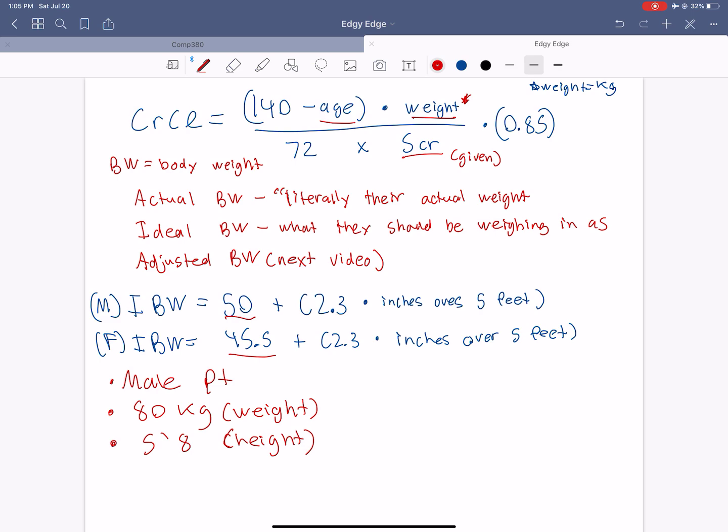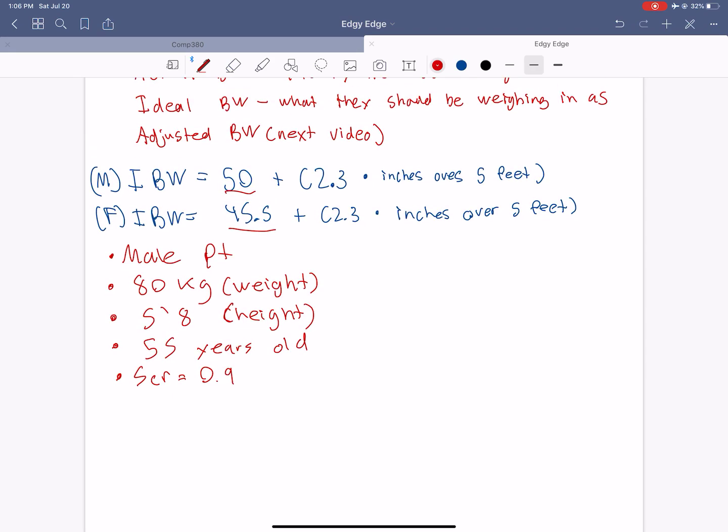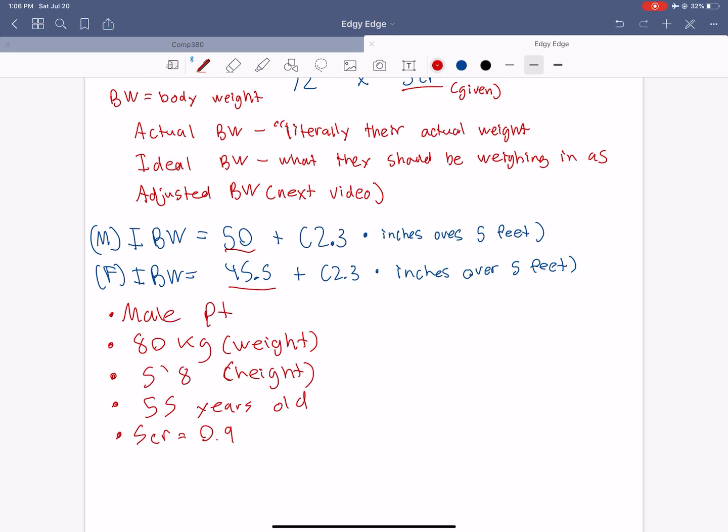So now let's do the creatinine clearance formula. Let's estimate his creatinine clearance based off these three factors we gave. And also, let's make him 55 years old, and give him a serum creatinine of about 0.9. So let's get started.